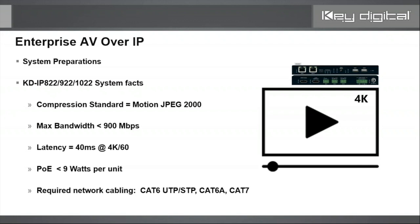Motion JPEG 2000 has a maximum bandwidth of less than 900 Mbps — I like to round up to 850 to be conservative. At 4K resolution, every single source is 850 Mbps. At 1080p, it's 250 Mbps; at 720p/1080i, it's 125 Mbps. Motion JPEG 2000 is a mild compression codec — mild compression equals high bandwidth, but also equals low latency: approximately 40 milliseconds, which is about one frame behind the original content.